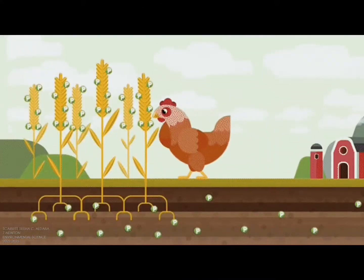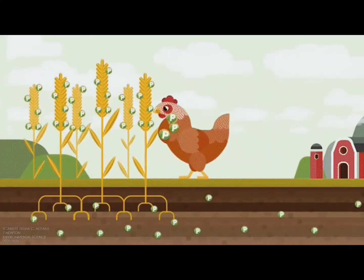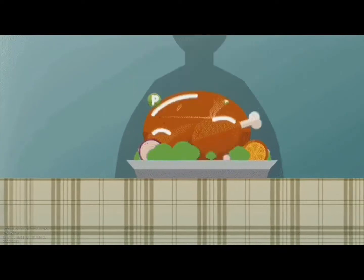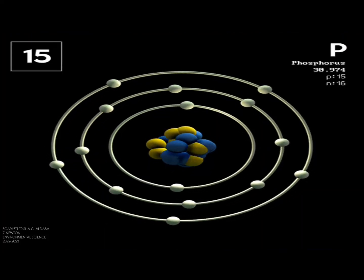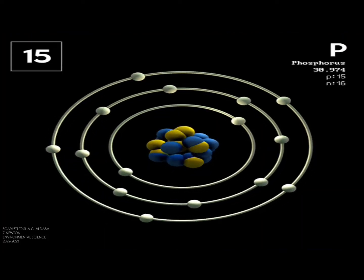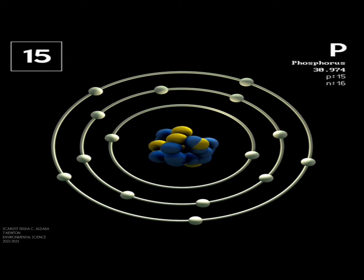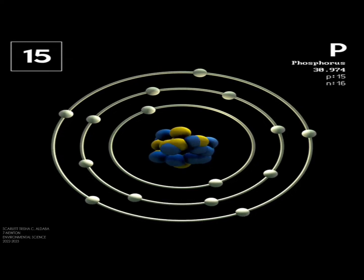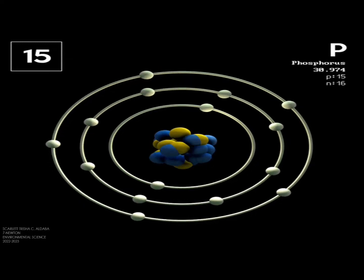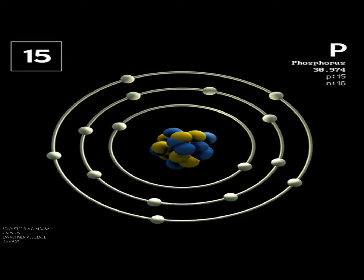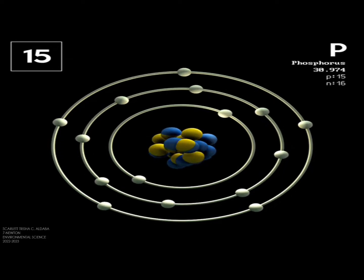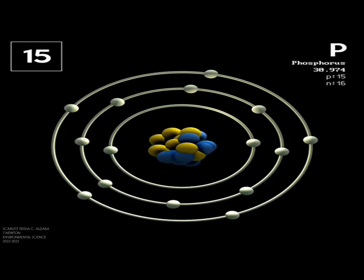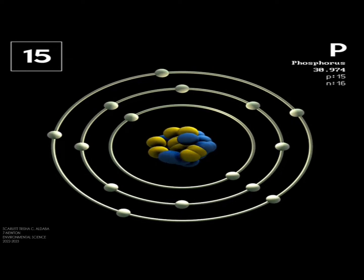Phosphorus is a very widely distributed element, the 12th most abundant in Earth's crust, to which it contributes about 0.10 weight percent. Phosphorus is a chemical element with the symbol P and the atomic number 15.